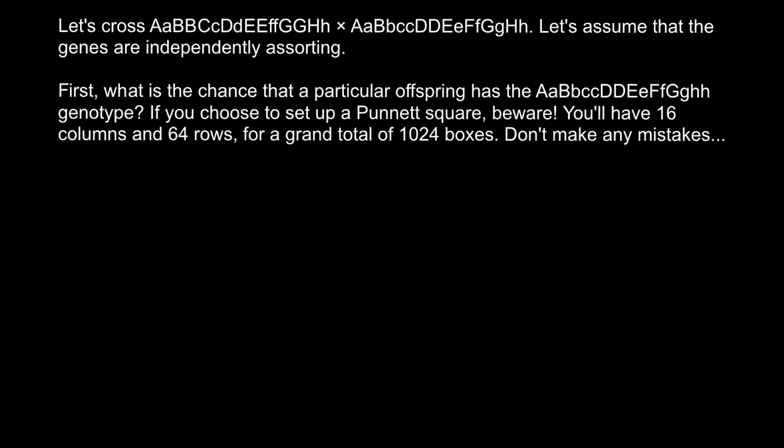Hello and welcome to Nikolai's genetics lessons. Today we have another genetics probability problem. We'll cross one genotype with another genotype, assuming that the genes are independently assorting. The first question is: what is the chance that a particular offspring has a particular genotype?